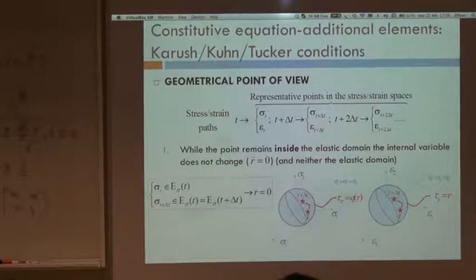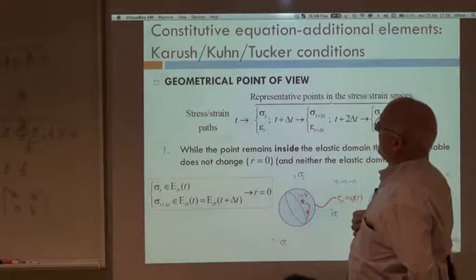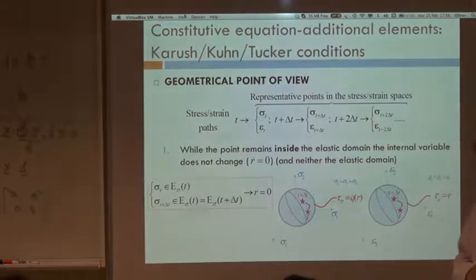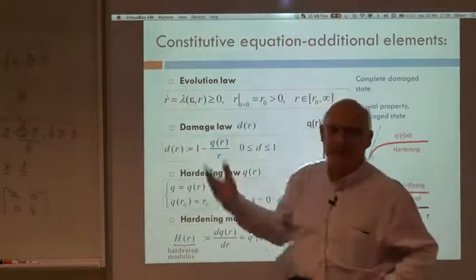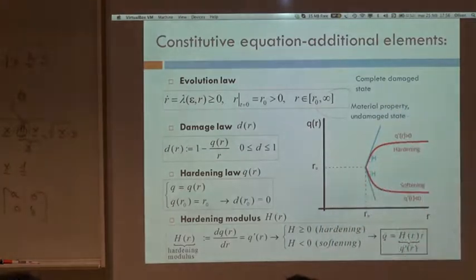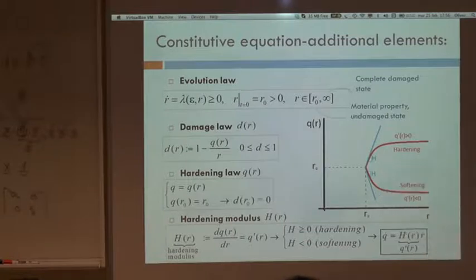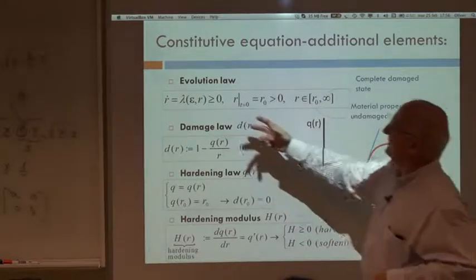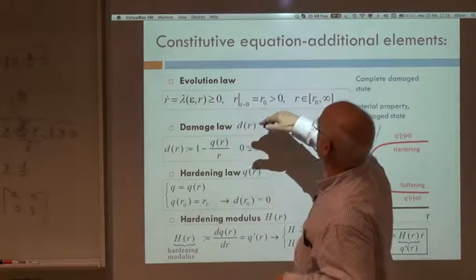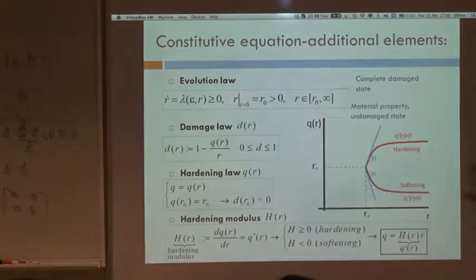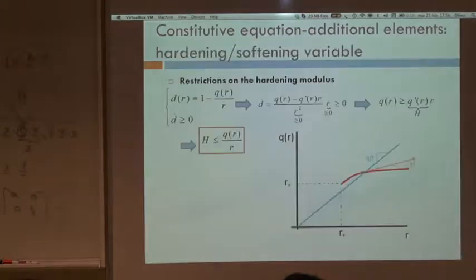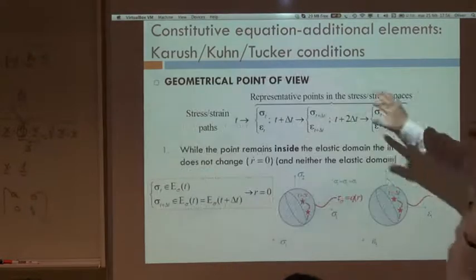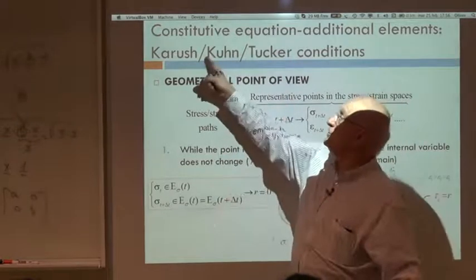There is one point to be solved: how to state that evolution equation. We said R-dot is lambda, but what is lambda? How do we solve for lambda? This is going to be defined in a quite indirect way — the famous Karush-Kuhn-Tucker conditions. These are very common in optimization: conditions to meet a minimum of one function in a domain restricted by inequality conditions.